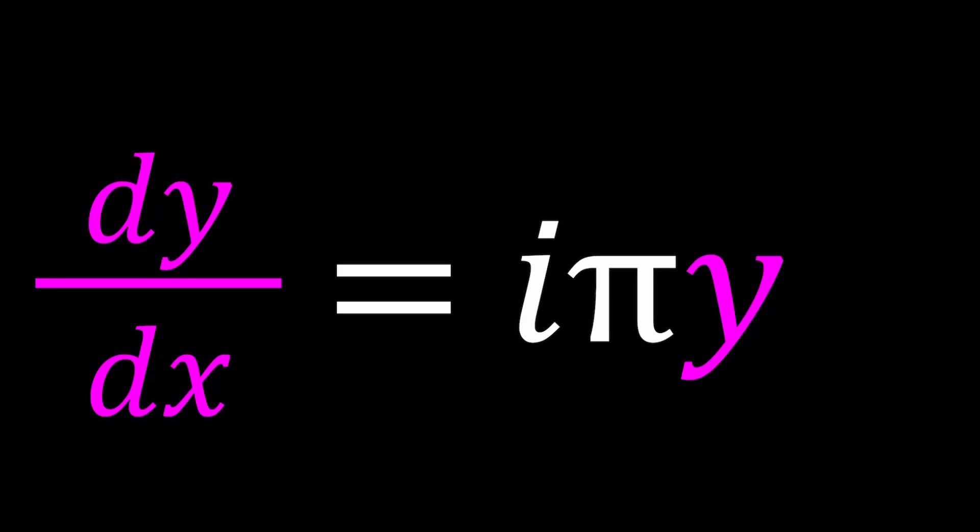Hello everyone. In this video we're going to be solving a differential equation with pi and i. We have an imaginary number and an irrational number, a transcendental number all together in the same equation.